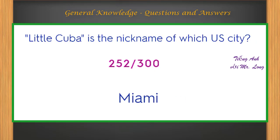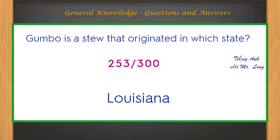Little Cuba is the nickname of which U.S. city? Miami. Gumbo is a stew that originated in which state? Louisiana.